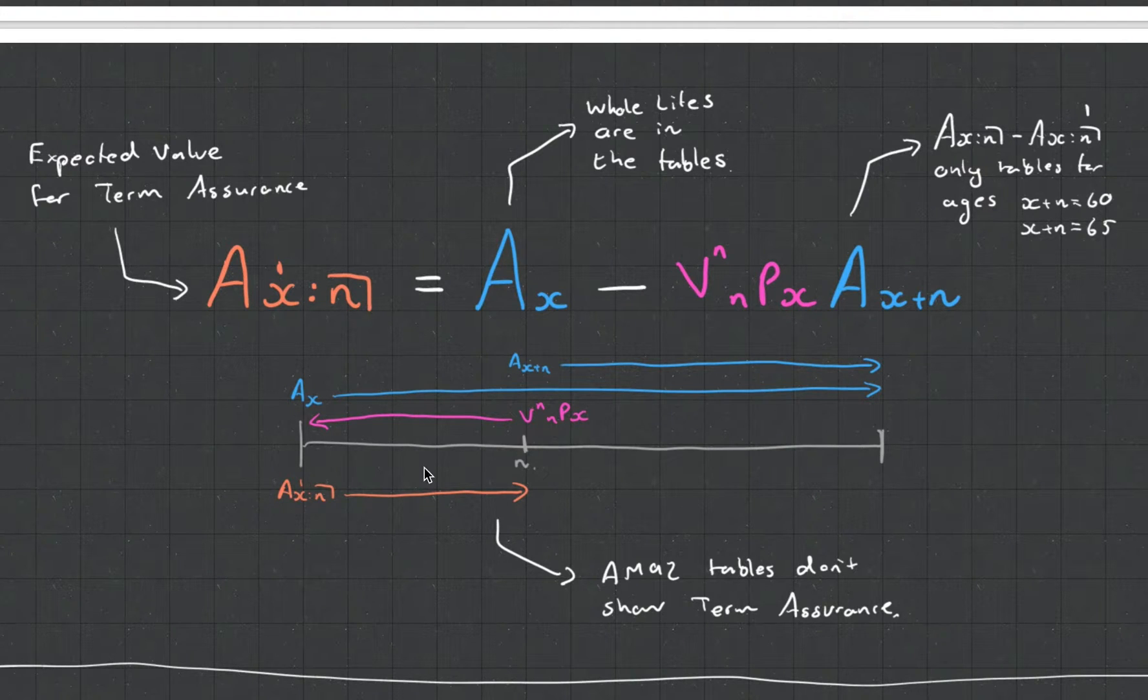On the timeline I've got over here, we can see that our term assurance lives in this area. It's going to be effective from here. That is the same as a whole life assurance with the same age, except for, as you can see, after time N, there's all this extra bit here.